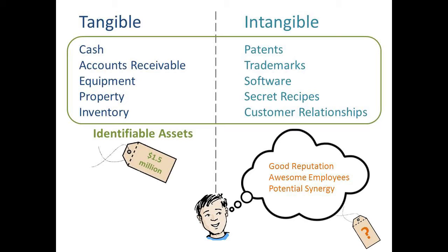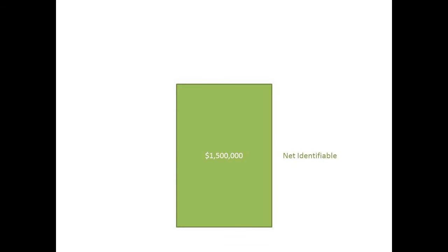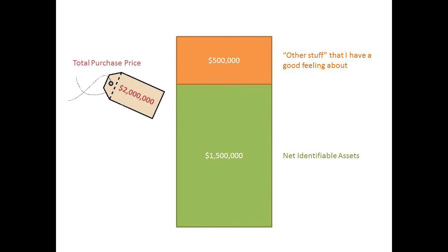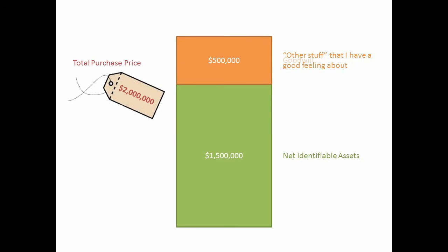We're pretty sure that we're willing to pay more than $1.5 million to buy this company, because we have a good feeling about this other stuff. We think the value is more than just the sum of the identifiable assets on paper. So let's say we decide: instead of $1.5 million, we're willing to pay $2 million. It's like: I see your $1.5 million in identifiable assets, but I'll raise you an extra $500,000 for this other stuff. That extra payment of $500,000 — that becomes the goodwill.